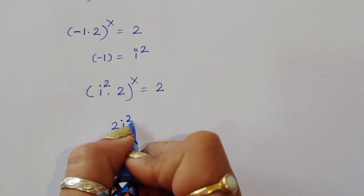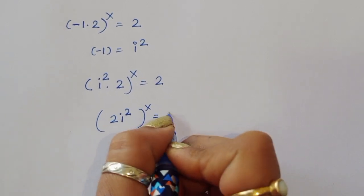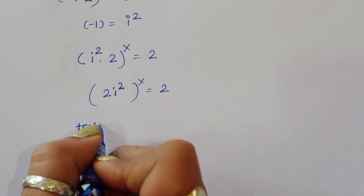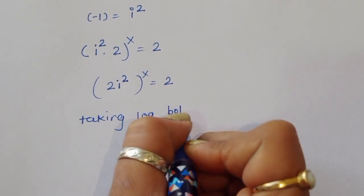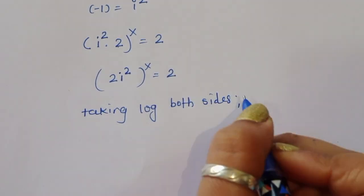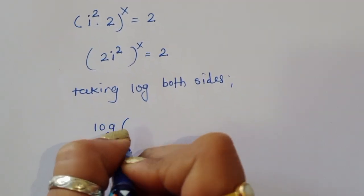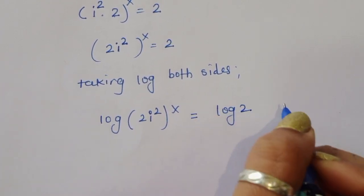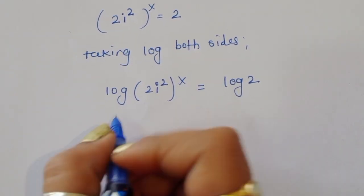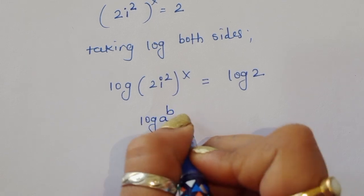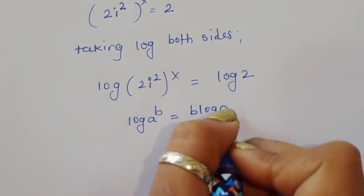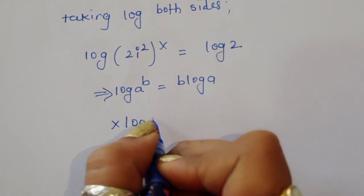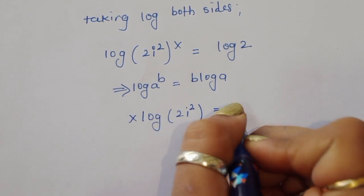So (2i²)^x = 2. Now taking log on both sides, we get log of (2i²)^x = log 2. We know the formula log(a^b) = b·log(a), so using this formula we get x·log(2i²) = log 2.